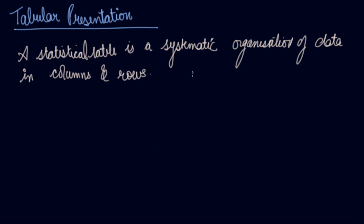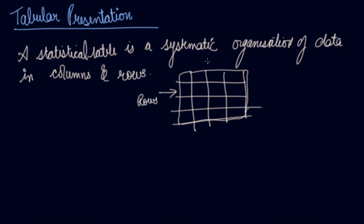So your vertical dissections of table are known as columns. Let's suppose this is your table. These are known as rows. These are known as columns.